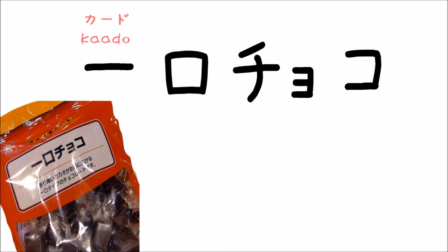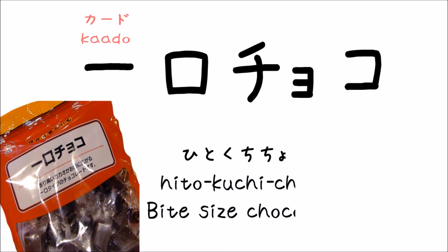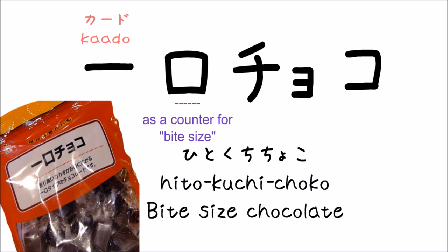Then I asked my grandpa, and he told me it's supposed to be read as hitokuchi choko, which means bite-sized chocolate. The kanji for hitokuchi literally means one mouth, but it means one bite or one bite-sized. Japanese has crazy counting systems with no rules — native speakers also cannot always figure out how to read words with numbers and counters, so you basically just need to memorize each counter.